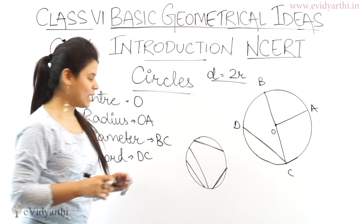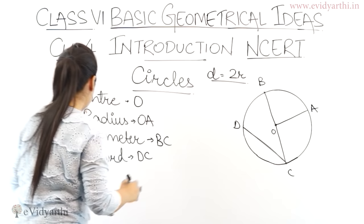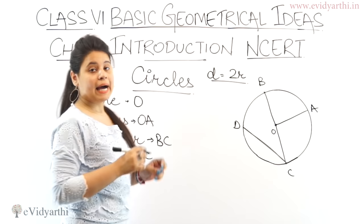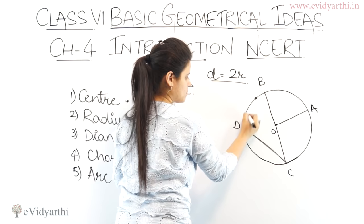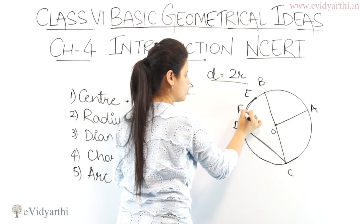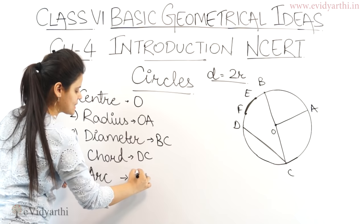The next thing is an arc. An arc is formed when we take two points on the circle. Let's mark two points E and F on the circle. The curve between E and F — that is an arc. So we write it as arc EF. The curved part between the two points on the circle is the arc.